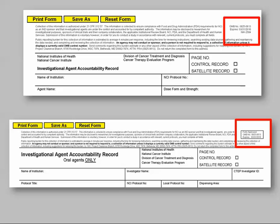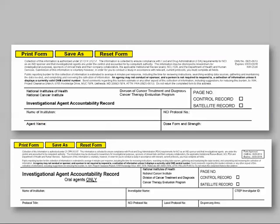If the specific protocol DARF is saved or printed for future use, check the expiration date in the upper right-hand corner to be sure the document is still in date prior to use. If your institution uses drug accountability software or e-DARFs, the database must be able to produce a paper printout that is identical to the NCI DARF. PMB does not endorse any particular e-DARF pharmacy package.